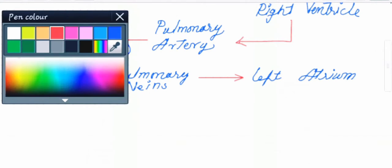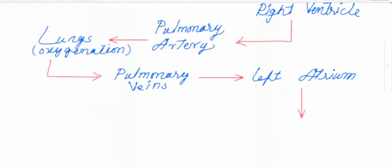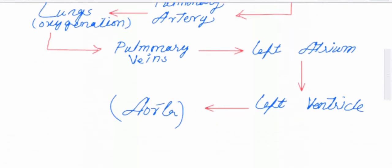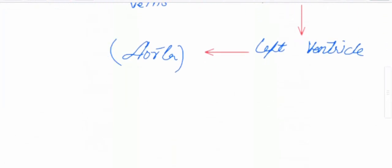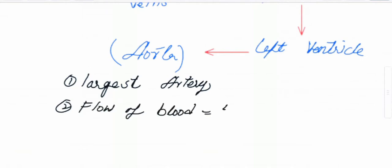Left atrium pumps its blood into left ventricle. Left ventricle distributes blood by aorta. Aorta is the largest artery of body and speed of flow of blood is 400 to 500 mm per second.